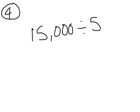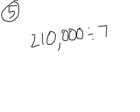What's 15,000 divided by 5? Well, how many thousands would I have? I would have 3,000. How would I write that number in standard form? It's 3,000. What's 210,000 divided by 7? If I divide 21 ten-thousands into 7 groups, how many ten-thousands will be in each group? Three. How do I write 3 ten-thousands in standard form? It's 30,000.